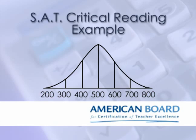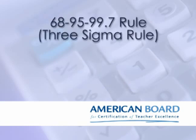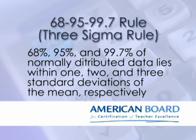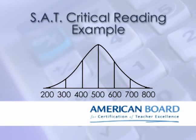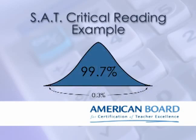Because SAT scores are normalized, you can draw very specific conclusions, including something called the 68-95-99.7 rule, or the 3 sigma rule, which states that 68% of all normally distributed data values lie within one standard deviation of the mean, 95% of the data lies within two standard deviations, and 99.7% of the data lies within three standard deviations of the mean. How likely are you to score an 800 on the critical reading section? Since 99.7% of the data lies within three standard deviations, that leaves 0.3% of the population scored beyond three standard deviations. Dividing that by 2 to get only extremely high scores gives 0.15% — only 0.15% of students that take the SAT get an 800 on the critical reading section.